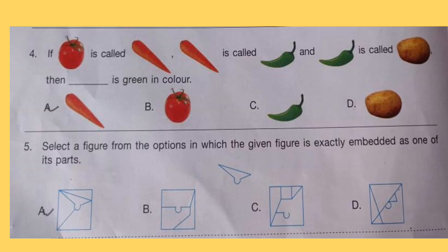Question 4: If tomato is called carrot, carrot is called chilli, chilli is called potato, then dash is green in colour.